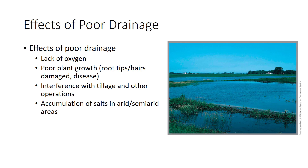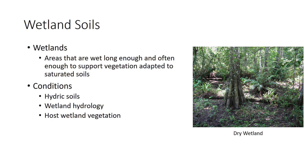Poor drainage also frequently interferes with success in managed landscape settings. As a consequence of their importance, federal and state programs offer protection to wetlands and losses have slowed over the past decades. Wetlands are defined as areas that are flooded or saturated by surface or groundwater often enough and long enough during the growing season to support vegetation adapted for life in saturated soils.